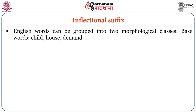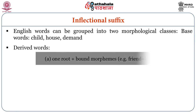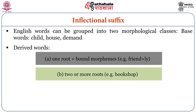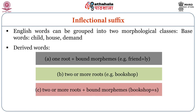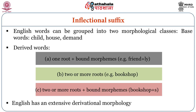English words can be grouped into two morphological classes: base words like 'child,' 'house,' 'demand,' and derived words. Derived words include one root plus bound morphemes — for example, 'friend' + '-ly,' where '-ly' is the bound morpheme; two or more roots like 'bookshop'; and two or more roots plus bound morphemes like 'bookshops,' where '-s' is the bound morpheme. English has an extensive derivational morphology.